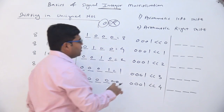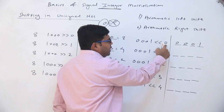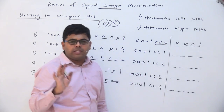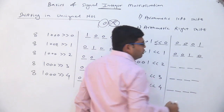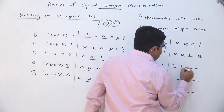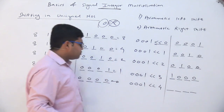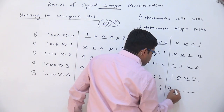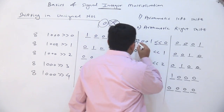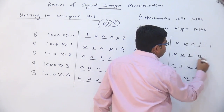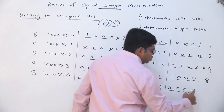Now let us see what happens in case of left shifting. When we left shift by 0 places, the number will remain as it is — 0 0 0 1 left shifted by 0 places means no shifting. Left shifting by 1 place gives 0 0 1 0. By 2 places it will be 0 1 0 0, by 3 places it will be 1 0 0 0, and by 4 places it will become 0 0 0 0.